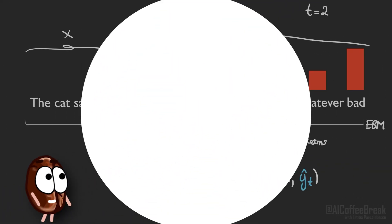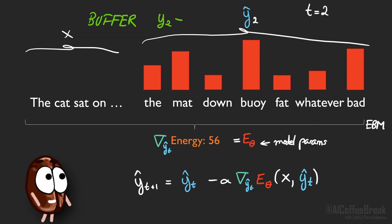Second, the authors use a replay buffer to stabilize training. Normally every refinement starts from a completely random guess, but if the model only ever sees that, it won't learn how to handle partially optimized states — which is exactly what happens during inference when guesses are gradually refined. To fix this, they store past predictions and intermediate guesses in a buffer, and during training the model sometimes starts refinement from one of those saved states instead of pure noise. This exposes it to a richer variety of in-progress situations and helps it generalize better.